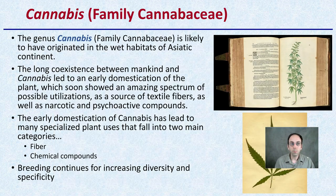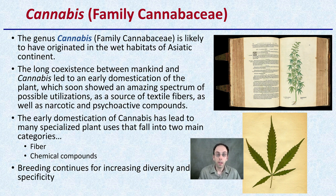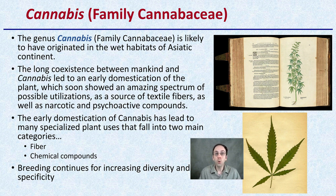Cannabis is a genus and it's likely to have originated in the wet habitats of the Asia continent. It's been a long coexistence with mankind, which led to its early domestication. The reason why it was domesticated is because of its many uses and possibilities — it could be the source for textile fibers or utilized for its psychoactive compounds. This early domestication has led to many specializations of the plant that fall into two main categories: fiber and chemical compounds. Breeding continues for increasing diversity and specificity within these general classifications.